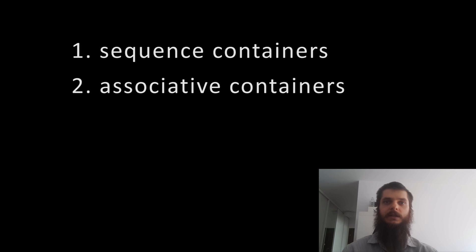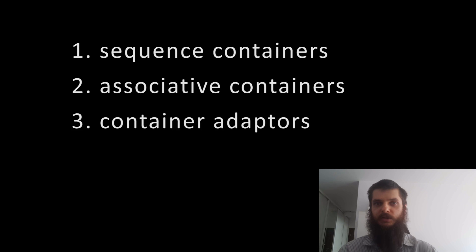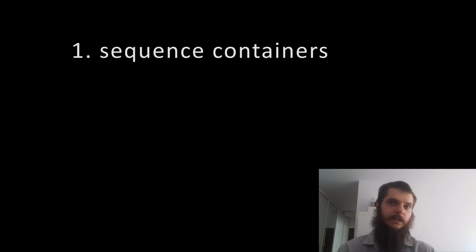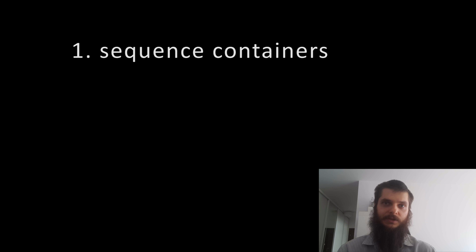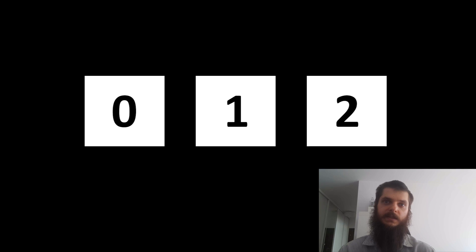STL containers are generally divided into two major groups: sequence containers and associative containers. There's also a third small group called container adapters, but let's leave them out for this moment. Sequence containers are pretty much containers which store elements in a linear fashion — you've got your first element, then your second one, third one, and so on.